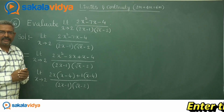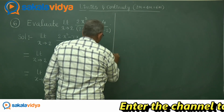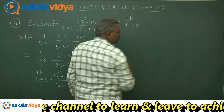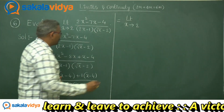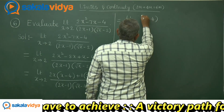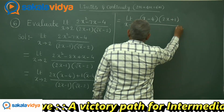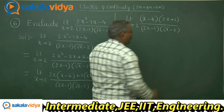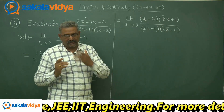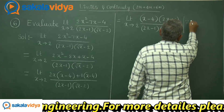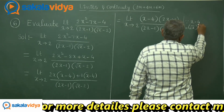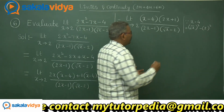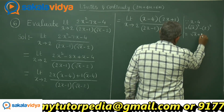Taking x minus 4 common from the numerator, we get (x minus 4)(2x plus 1). Now it is time to factorize x minus 4. This can be written as (√x)² minus 2², which is in the form a² minus b², whose factors are (a plus b)(a minus b). So the factors are (√x plus 2)(√x minus 2).